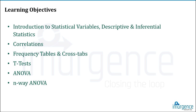In this session, we will talk about statistical variables, descriptive and inferential statistics, correlations, frequency tabs, cross tabs, t-test, ANOVA, and n-way ANOVA. N-way ANOVA is more specifically relevant for people in market research, so we'll stress more on ANOVA rather than more-than-two-way ANOVA.